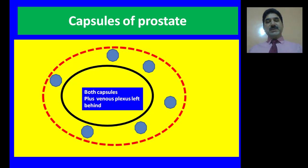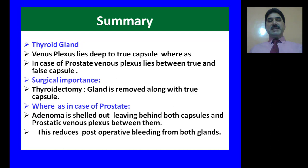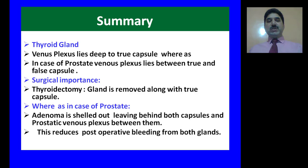To summarize this lecture: in the thyroid gland, venous plexuses lie deep to the true capsule, whereas in the case of the prostate, venous plexuses lie between the true and false capsules. During thyroidectomy, the gland is removed along with the true capsule, leaving behind only the false capsule. In the case of the prostate, the adenoma is shelled out, leaving behind both capsules and the prostatic venous plexuses between them. This procedure reduces post-operative bleeding from both glands.